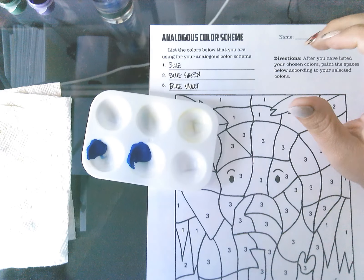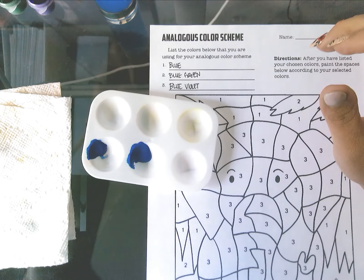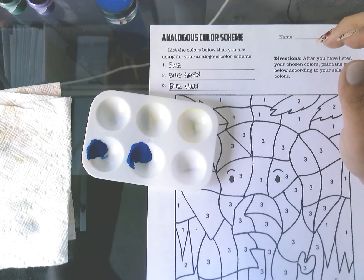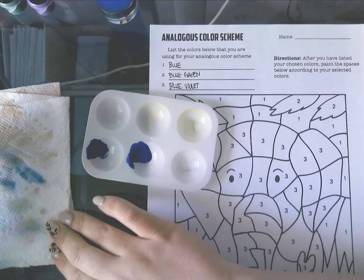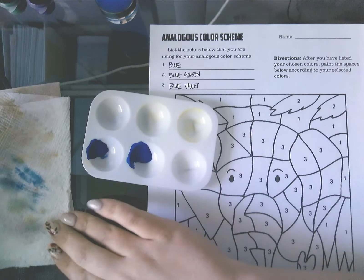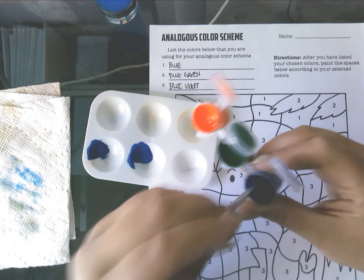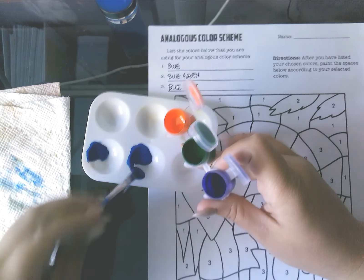And then the other colors I'm going to need are the green and the violet. So rinse off my brush. And if you watched the cool and warm color scheme, you'll know I broke my brush. So I'm really working with a teensy tiny brush here. It's falling apart. Okay. And so I'm going to need a lot of the blue-violet. So give me a big old scoop of that blue-violet in there.